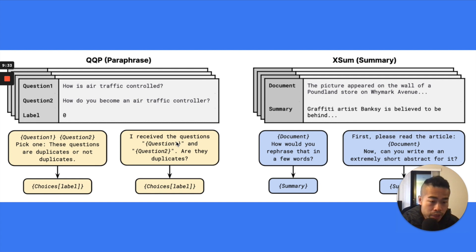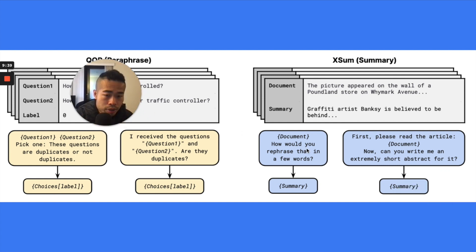So model may have better generalization capability for summarization. Same thing. You give the documents and would you rephrase this in few words or first, please read the article. And then now you can write me the extremely short abstract for it. So there are also just multiple templates for summarization. And this is very natural. Just like if you want to ask humans to do something, you will also use this one, right? If you would do a summarization test for students, you will also write descriptions for the task. And this is how we communicate with the model. So this is much better way.